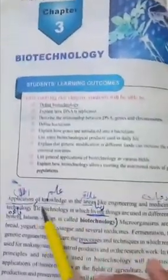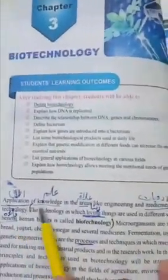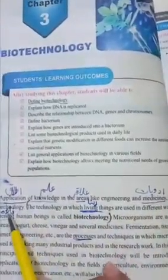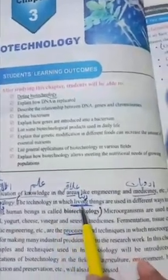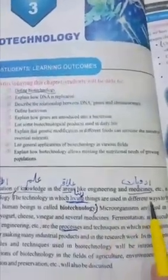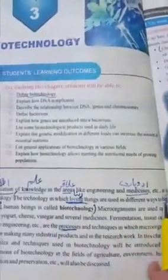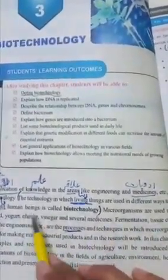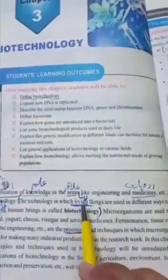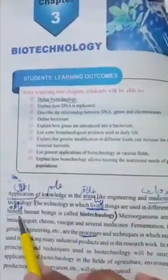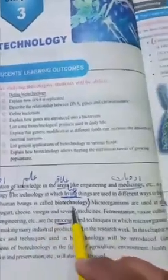Starting with reading. Application of knowledge in the areas like engineering and medicine, etc. is called technology. Engineering ya medicine ke knowledge ka different area mein apply karna technology kehlata hai. The technology in which living things are used in different ways for the help and benefit of human beings is called biotechnology.